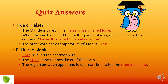Let's have a look at the answers. The mantle is called nife — False. The core is called nife. When the earth reached the melting point of iron, we called it the iron catastrophe. The outer core has a temperature of 5,500 degrees Celsius — True. Fill in the blanks: the core is called the centrosphere. The crust is the thinnest layer of the earth. The region between the upper and lower mantle is called the transition zone.